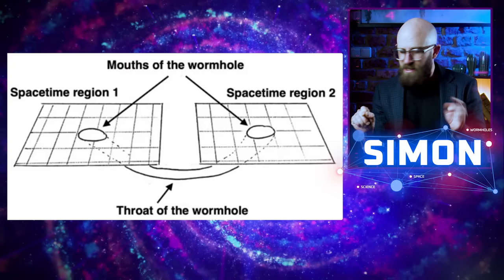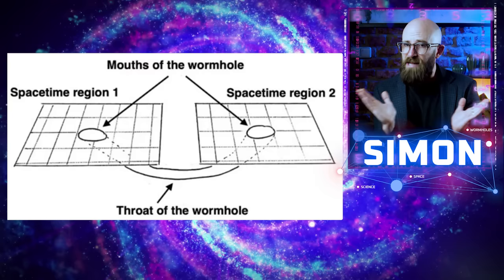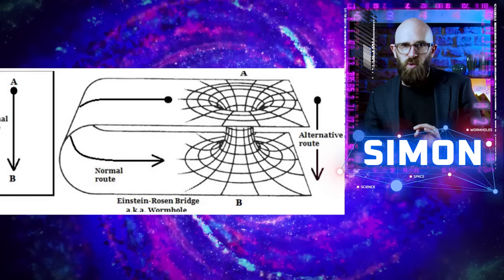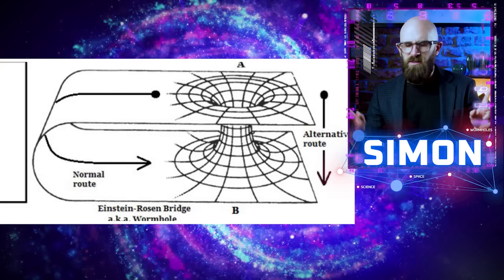But if you fold the paper and poke a pencil through the two points, traveling along the pencil instead of the paper would be a massive shortcut between the two distances, and that pencil would be the tunnel of a wormhole. Then again, that's also the best case scenario.